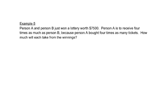Let's look at two word problems here where we have to set it up and solve it. It says person A and person B just won the lottery worth $7,500. Person A is to receive four times as much as person B because person A bought four times as many tickets. How much will each take from the winnings? In this problem we have two people, person A and person B. So let's set that up first.